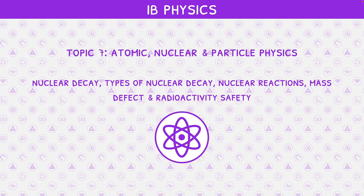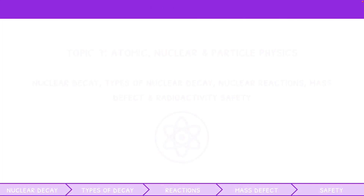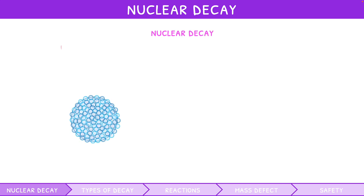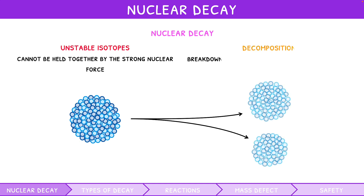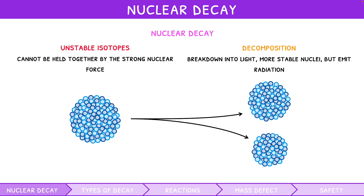In the previous IB Physics Topic 7 video, we ended on the concept of unstable isotopes. Unstable isotopes are unstable because their composition of neutrons and protons cannot be held together well by the strong nuclear force. As a result, they decompose into lighter, more stable nuclei, but emit radiation doing so. This process is called nuclear decay, or radioactive decay.